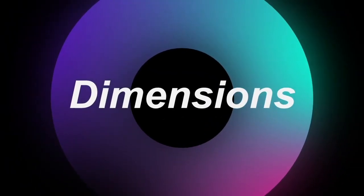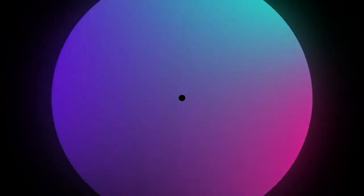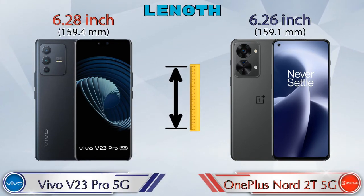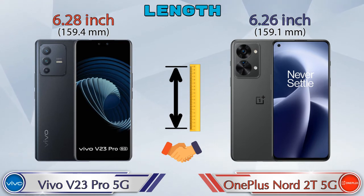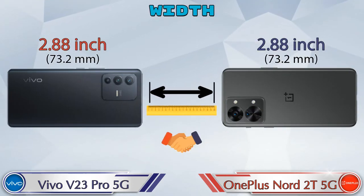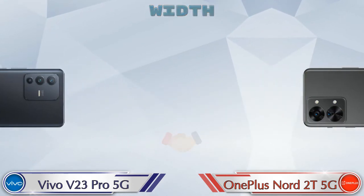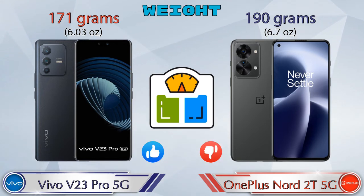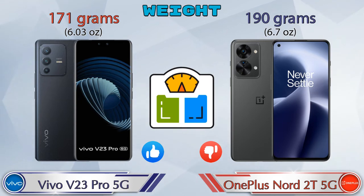Now let's check the details about dimensions. Talking about length, V23 Pro 5G is 6.28 inches and Nord 2T 5G is 6.26 inches — almost the same. The width is same in both phones at 2.88 inches. Talking about weight, V23 Pro 5G is 171 grams and Nord 2T 5G is 190 grams, making it heavier than the V23 Pro 5G.